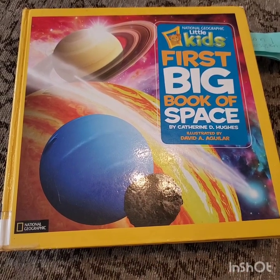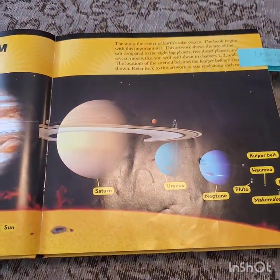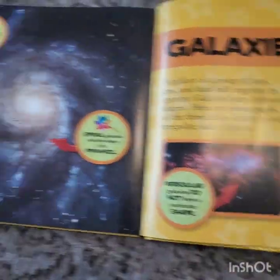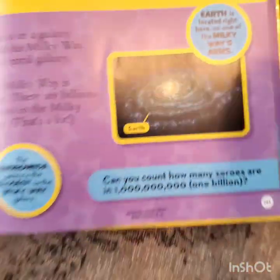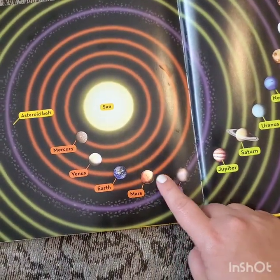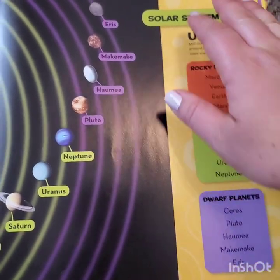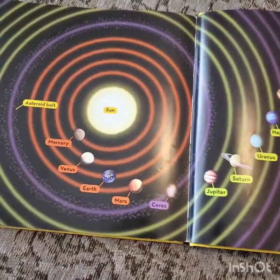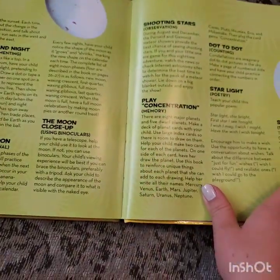One of my favorites was the 'Little Kids' First Big Book of Space.' For lesson one, while we were going over the solar system and Milky Way, this book was amazing for showing the scale of the planets. We talked about galaxies and the Milky Way, which shows where we are in our Milky Way. My favorite thing about it is the solar system map — it shows the rocky planets, the asteroid belt, a dwarf planet, the gas giants, and more dwarf planets, with little bite-sized pieces of information. My kids reference this so much we'll probably print it out and put it on the wall.